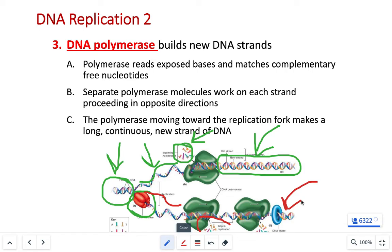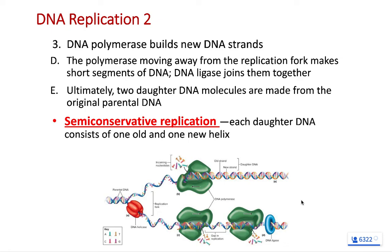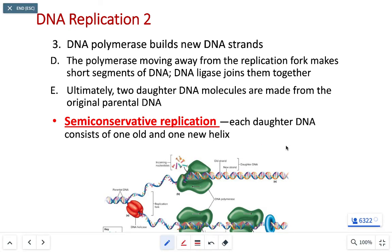This process is called semi-conservative replication. The original monomers of the parent strand are reused and incorporated into the daughter strands. Each daughter strand of DNA is half old, half new — one side comes from the parent strand, and the other side is brand new and made on the spot.